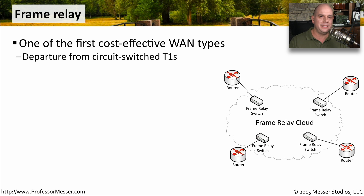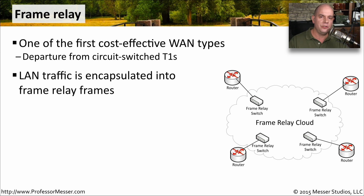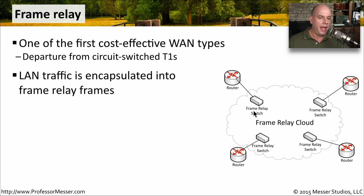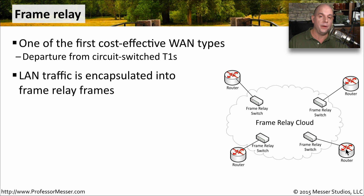We started to replace these point-to-point T1s with something more flexible called frame relay. In frame relay, we encapsulated our LAN traffic into frame relay frames and sent them into what we called a frame relay cloud. We called it a cloud because our local router would put traffic into the cloud — this was all the provider's world. We didn't exactly know how the data was getting from one point to the other; all we knew was we would put traffic into the cloud, and then magically it would show up on the other side.